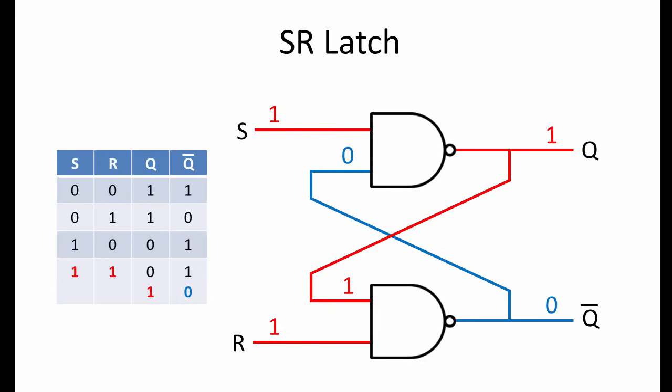When R is set low momentarily, the output at Q is changed to 0. R can then return to its normal high value, and the latch is now storing a 0 again.